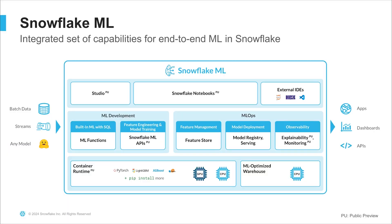First, let's talk a bit about Snowflake ML. Snowflake ML is a set of integrated capabilities to do end-to-end machine learning in Snowflake. It comprises IDEs such as Studio, Snowflake Notebooks, and external IDEs, which you can use to build your models using ML functions or Snowflake ML APIs. Do MLOps using Feature Store, Model Registry, and Observability — all on scalable compute such as container runtimes or ML-optimized warehouses.